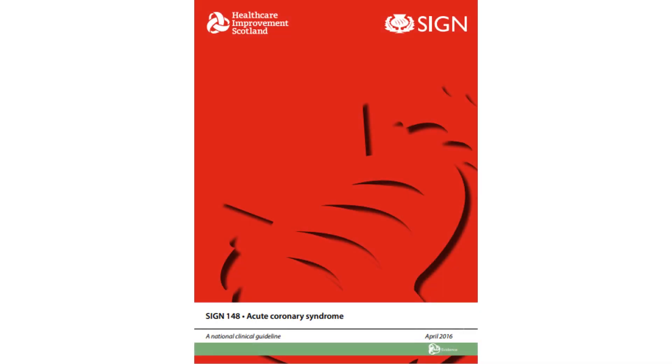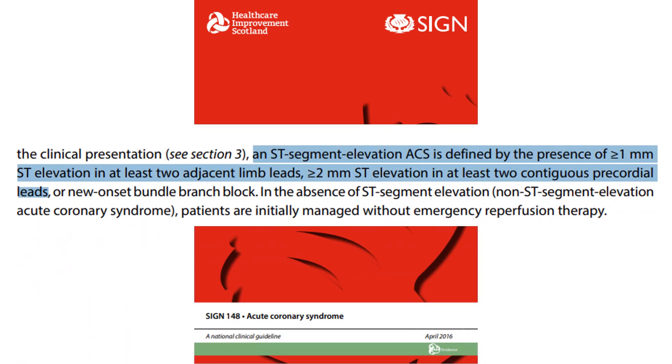So the question is: why is UK practice following the ALS definition that differs from definitions almost everywhere else in the world? When I tried to find the STEMI definition in the NICE guidelines, I couldn't find any specific definition in terms of how much ST elevation is required. But I did find something interesting in the SIGN guidelines published in April 2016 — they defined ST elevation ACS as more than one millimeter in at least two adjacent limb leads, and two millimeters in at least two contiguous precordial leads. Exactly the same as the ALS definition. This is the only other guideline I could find citing two millimeters for STEMI.